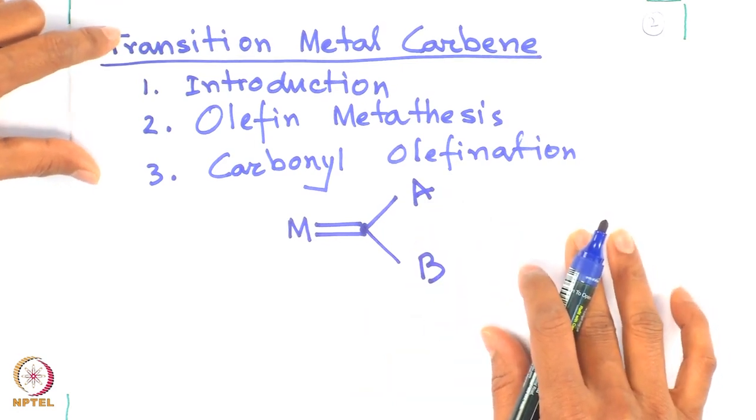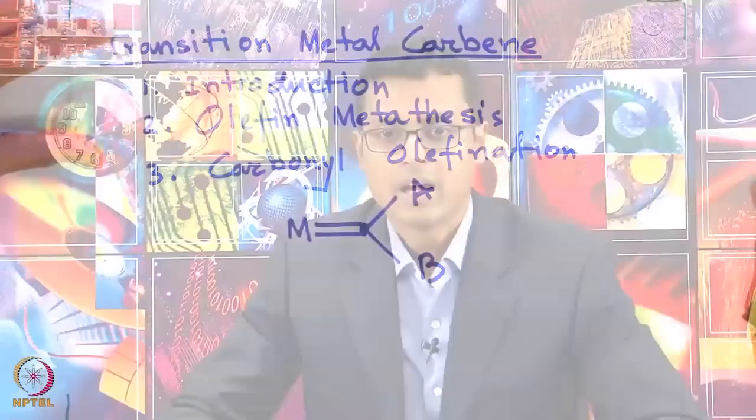Today we will discuss transition metal carbenes: how they are synthesized, how their names have appeared, and also their reactivity pattern. General classes typically feature two types of carbene: Fischer carbene and Schrock carbene. These two types of carbene have very distinct features. We will look at one example of Fischer carbene and then discuss Schrock carbene with its characteristic features.